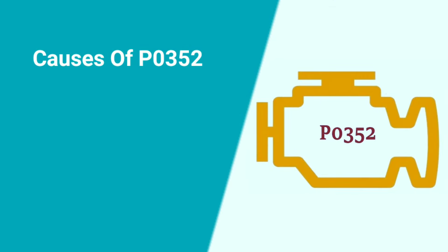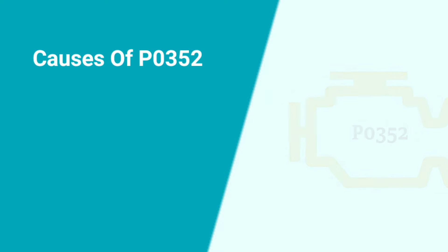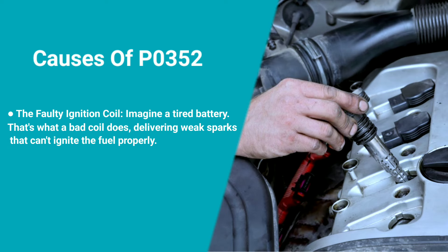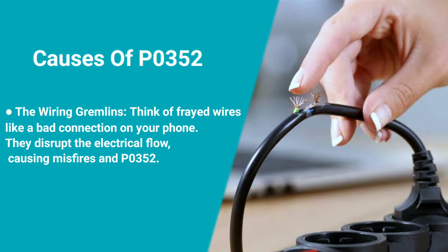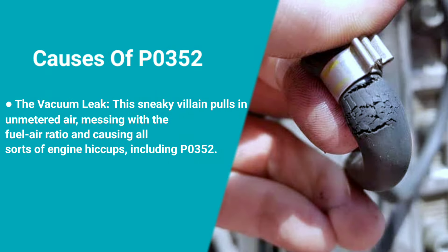There are several potential causes for this code. A faulty ignition coil — imagine a tired battery; that's what a bad coil does, delivering weak sparks that can't ignite the fuel properly. Worn-out spark plugs — like damp matches, they just won't light the fire; old plugs can't create the strong sparks needed for combustion. Wiring gremlins — frayed wires like a bad connection on your phone disrupt the electrical flow, causing misfires and P0352. Finally, a vacuum leak pulls in unmetered air, messing with the fuel-air ratio and causing engine hiccups, including P0352.